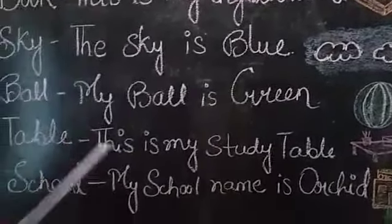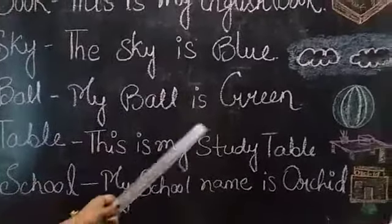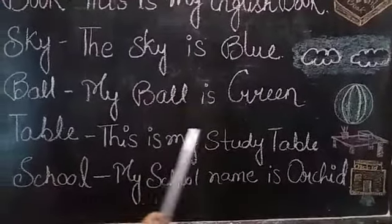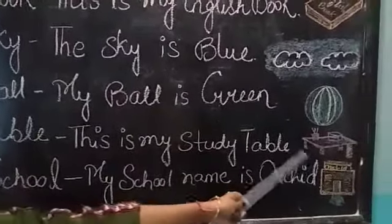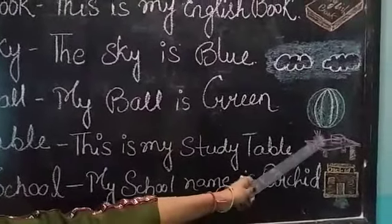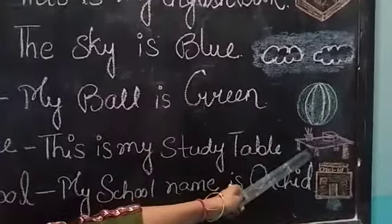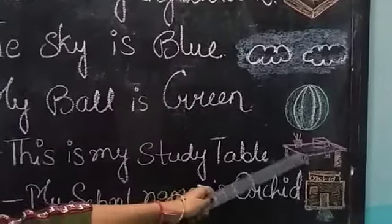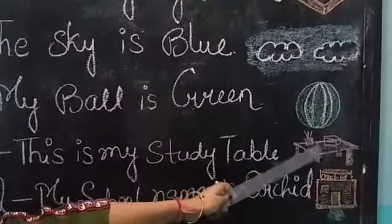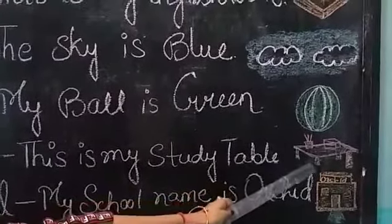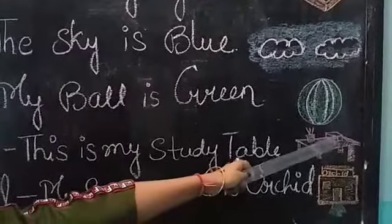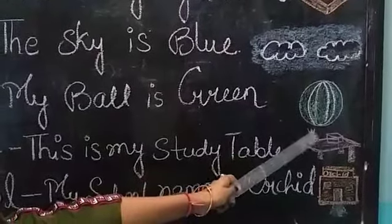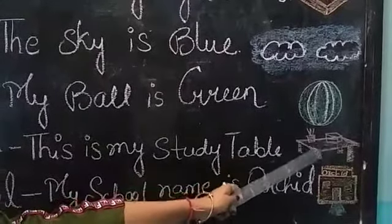Table. This is my study table. What is this, student? Study table. The table which we can study is a study table. This is a book. This is a pencil. Pen stand.